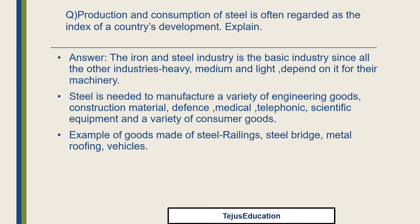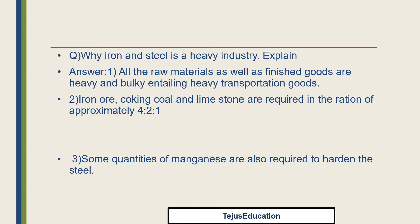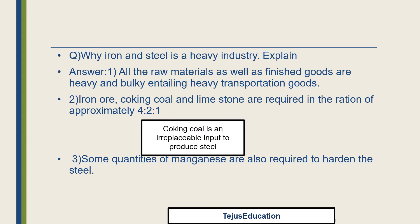Why is iron and steel a heavy industry? All the raw materials as well as finished goods are heavy and bulky, entailing heavy transportation. Iron ore, coking coal, and limestone are required in a ratio of approximately 4:2:1. Coking coal is an irreplaceable input to produce steel — without these three, steel production would be very difficult.